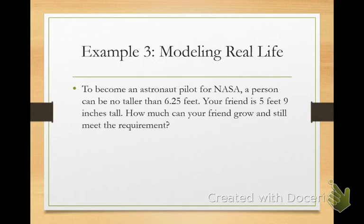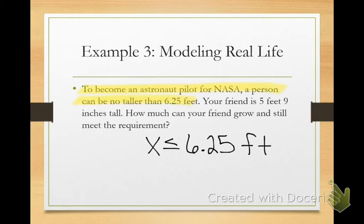Okay. So to become an astronaut pilot, I need you guys to write the inequality that represents this situation. Go ahead and try that. All right. Somebody raise your hand and tell me the inequality that you wrote. Come on. I put X is greater than, is less than or equal to 6.25. X is less than or equal to 6.25. And we can say feet just to kind of remind us. But you don't have to. The numbers is really all that matters. So 6.25 feet.